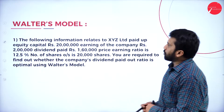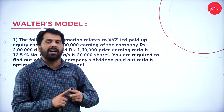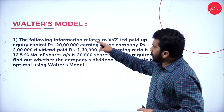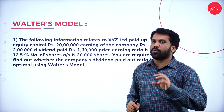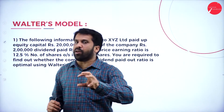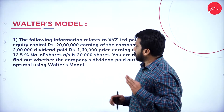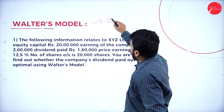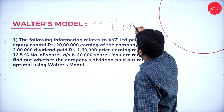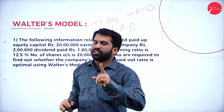Under dividend decision, the two major models are Walter's model and Gordon's model. Under Walter's model, the concept is: whatever profit is earned, keep everything as retained earning. Dividend is given zero — not even 1 rupee to the shareholder. Whatever profit is earned, keep it as savings.